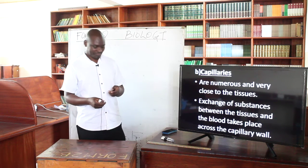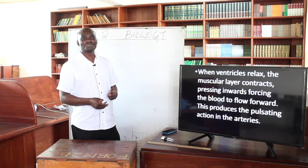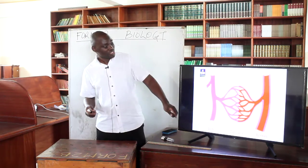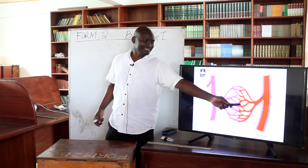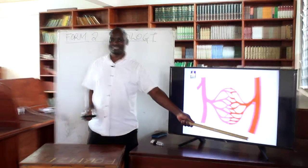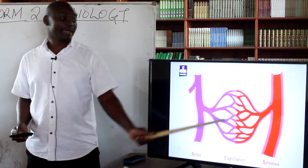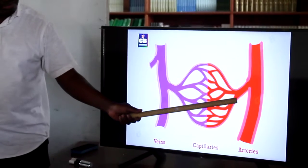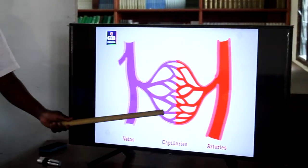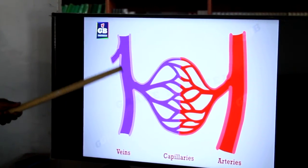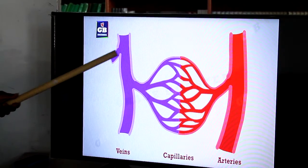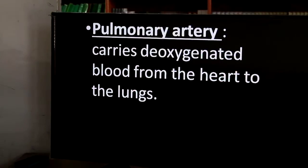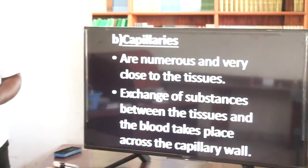Without wasting time, let us move on. I want to take you back to what we did last time. Arteries come from the heart and carry oxygenated blood. Arteries branch into arterioles, arterioles into capillaries, capillaries into venules, and venules join to form veins. That is something you need to know as we move on to our lesson today on capillaries.